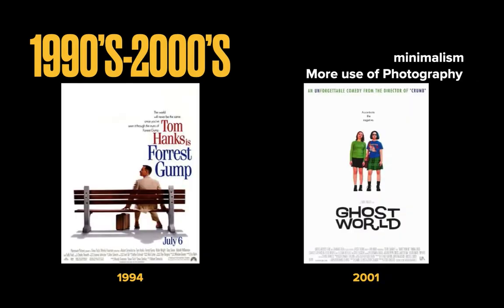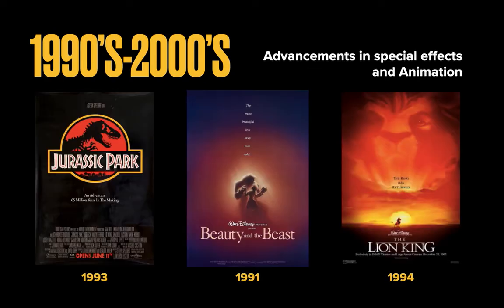In the 1990s to 2000s, Minimalism really drove the poster. These posters kept up with trends in typography and used more photography instead of illustration. Minimalism is seen in movie posters such as 'Forrest Gump' and 'Ghost World.' The layout largely stayed the same, however there were many advances in special effects in movies and animation, bringing forward some of the biggest box office films like 'Jurassic Park,' 'Beauty and the Beast,' and 'The Lion King,' which would lead the way for many movies we know today.